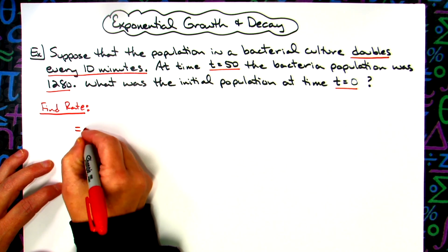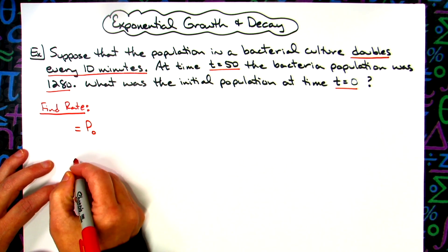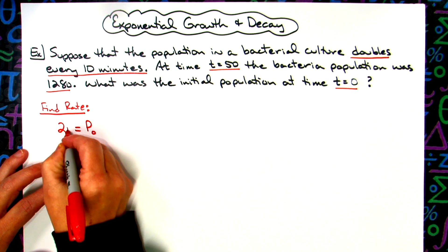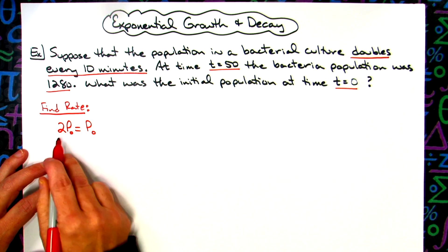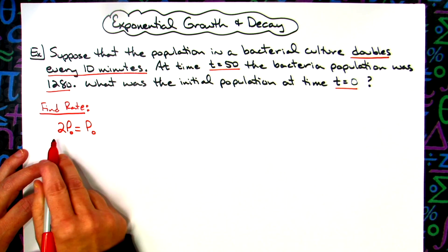If I say I've got an initial population P and then it doubles, then they're showing the relationship between I started with P and I doubled here.